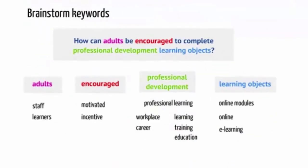Before you start searching for books or journal articles, it's useful to brainstorm keywords. Here is the problem in the form of a question: how can adults be encouraged to complete professional development learning objects? Pull out the most important words — these are your concepts. In this example, they are adults, encouraged, professional development, and learning objects. Think of different ways of expressing those concepts, as authors may not use exactly the same terms as you have.